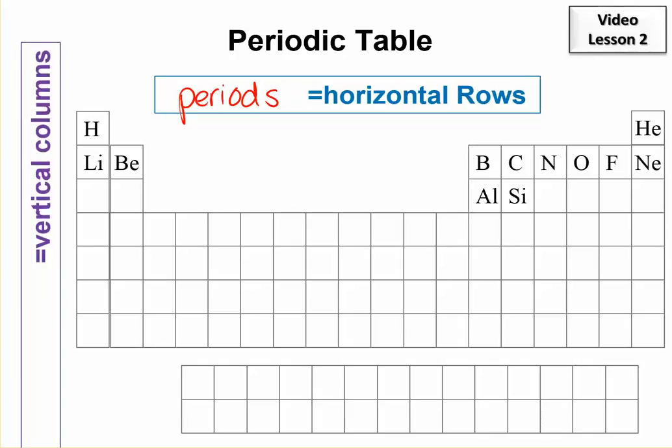The vertical columns, moving up and down, this is called a group. So the vertical columns are groups.